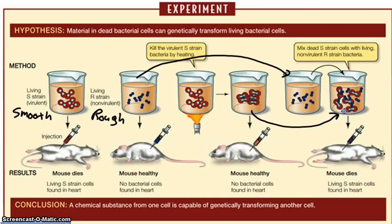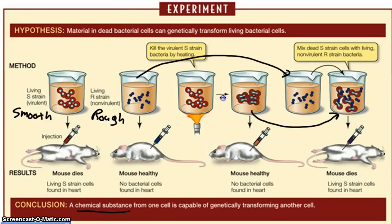He mixed the rough bacteria and the heat-killed smooth bacteria together, injected that mixture into the mouse, and lo and behold, unfortunately, the mouse dies. His hypothesis was that there's some kind of chemical substance — he called it his transforming factor — that isn't alive, because if it were alive the boiling would have killed it. There's some kind of substance that takes rough bacteria and transforms them into smooth bacteria.